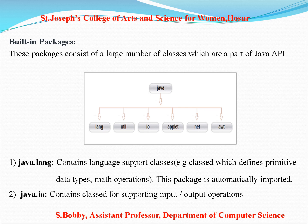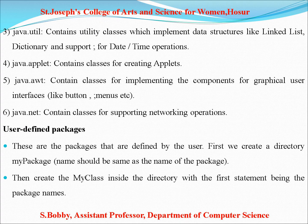Next, java.io contains classes for supporting input and output operations. Next, java.util contains utility classes which implement data structures like linked list and dictionary, and support for date and time operations. It includes utility classes and interfaces to handle various common tasks, and a set of common and reusable methods.